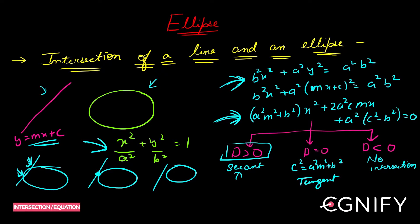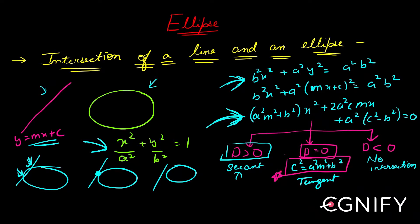For the condition for tangency: if the line is touching the ellipse, it touches at only one point, so we must have repeated roots for this quadratic. We equate the discriminant to zero, and that gives the condition for tangency. We will see this again when we derive the equation of the tangent in slope form.